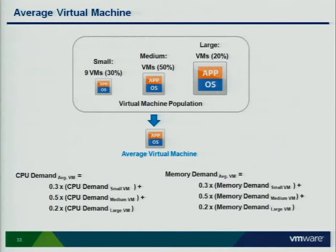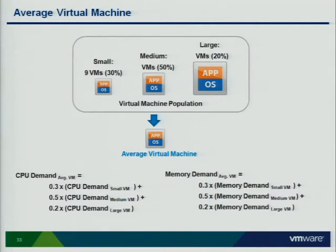To calculate the average VM, you look at all the compute dimensions — CPU, memory, disk I/O, and disk space — and you define the scope of your population. For each object level, whether it's a data center, cluster, or host, we calculate the average VM of that selected population. The higher you go up, the more your population is dispersed — small, medium, large. That input for the average VM determines the VM count capacity you have.